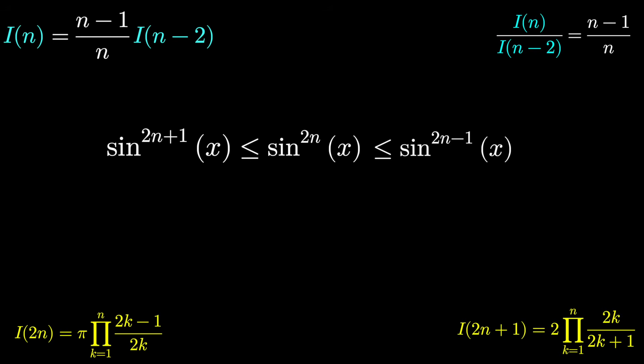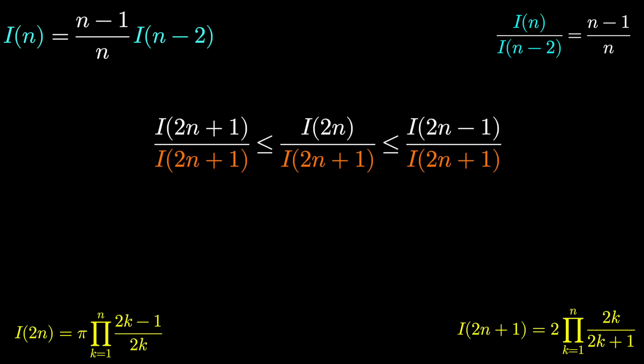This is true for any x in 0 to pi, which is the interval we're integrating over. But hey, this is just our formula. I(2n+1), which is less than I(2n), which is less than I(2n-1). And if we divide by I(2n+1), some interesting things happen.